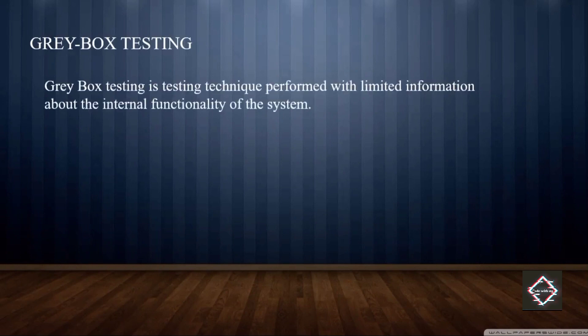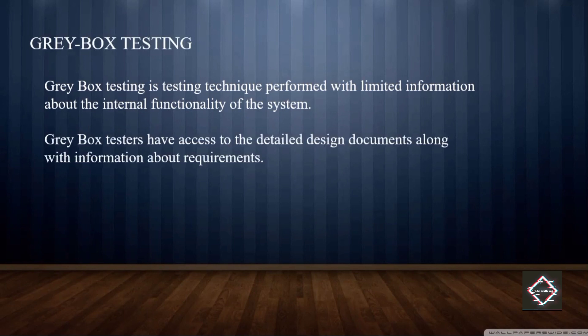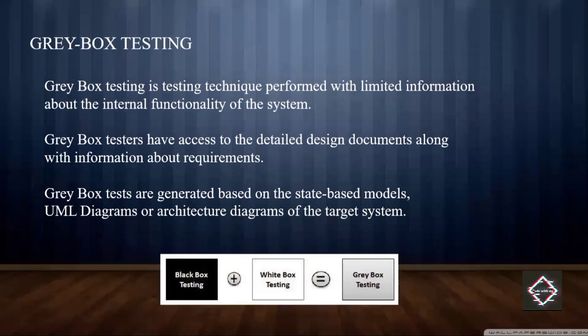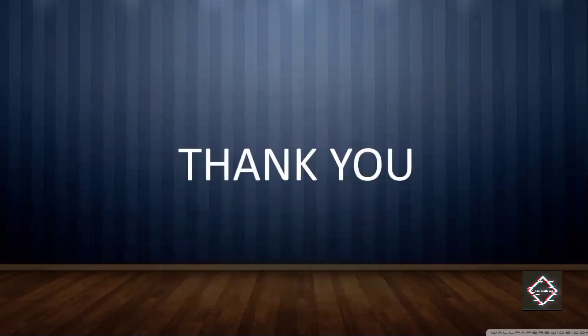Gray box testing is a combination of white box and black box testing. It is a technique performed with limited information about the internal functionality of the system. Gray box testers have access to design documents along with information about the program. Gray box testing is generated based on state-based models, UML diagrams, and architecture diagrams. In short: black box testing plus white box testing equals gray box testing. If you liked this video, make sure to like, share, and subscribe to the channel.